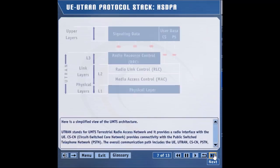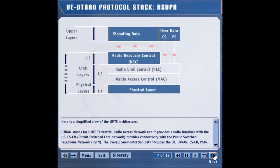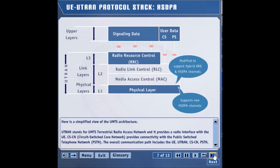Let's see how the protocol stack between the UE and the UTRAN is modified to support HSDPA. The physical layer is significantly changed so that it can support new channels which can provide superior data rates. The MAC layer is also modified as the new HSDPA channels are introduced. The RRC layer is modified to manage the configuration of new HSDPA channels.